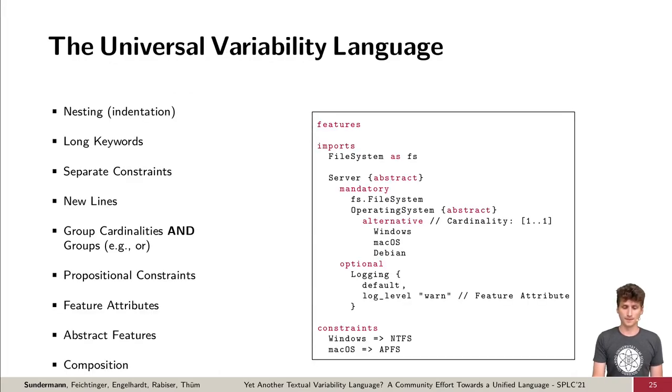Here we can see the resulting language design. UVL uses nesting to specify hierarchy and long keywords instead of abbreviated ones or symbols. Furthermore, cross-tree constraints are separated from the tree. Statements are ended with new lines. To specify the parent and child relationship, you can use either cardinality like choose 1 out of 3 or 2 out of 6 or group types such as mandatory, optional, alternative or OR. Constraints are limited to propositional logic in contrast to, for example, first order logic. The language contains feature attributes such as a log level here. The language supports abstract features and composition, so other feature models such as the FHIR system here can be referenced.